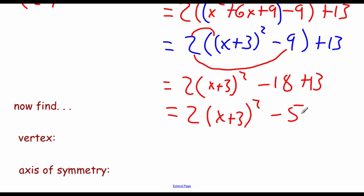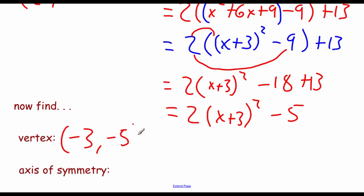Now that this is in standard form, we can identify the vertex and axis of symmetry. For the h value inside parentheses with our x, we do a sign change — so instead of positive 3, our h value is negative 3. The k value on the end stays exactly the same, so the vertex is at negative 3, negative 5. Writing out the equation for the axis of symmetry, we get x equals negative 3.